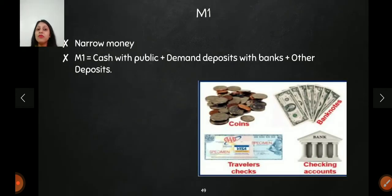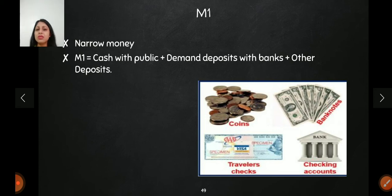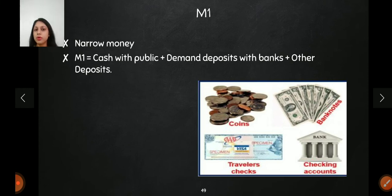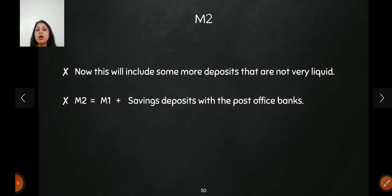Second is M1. M1 includes the currency and cash with the public, plus demand deposits, because demand deposits are very highly liquid — you can easily convert them into any form. M1 is called narrow money. So it is currency plus demand deposits, and any other deposits that are highly liquid come under M1.